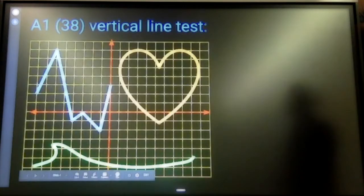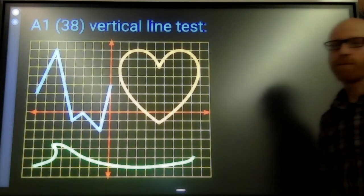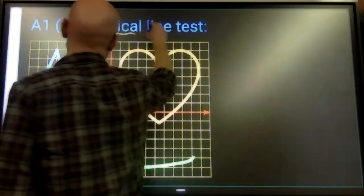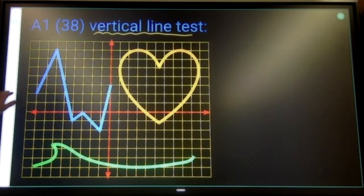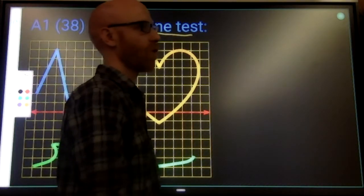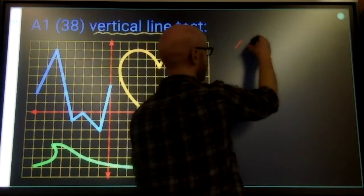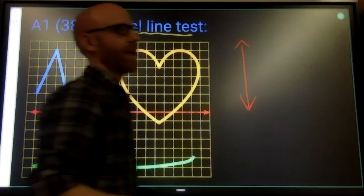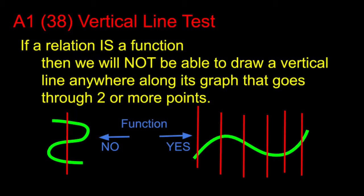So I'm going to show you how this works. In a graph, we use something called the vertical line test to test for functionality. And what that means is if a relation, a relationship that is shown, is a function, I will not be able to draw a vertical line that goes through two or more points in that relation.